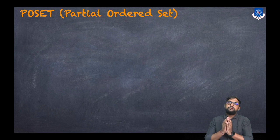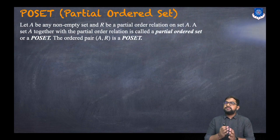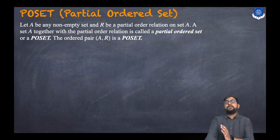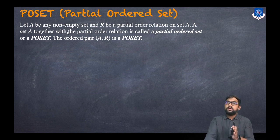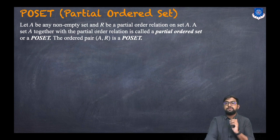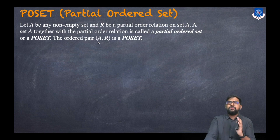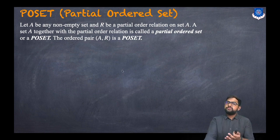First, let us recall what is a poset — that is a partial ordered set. Let capital A be any non-empty set and let capital R be a partial order relation. A relation is called a partial order relation if it is reflexive, antisymmetric, and transitive. A set A together with this partial order relation is called a partial ordered set, or simply a poset.